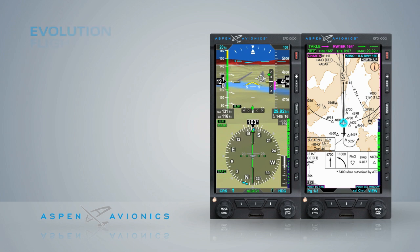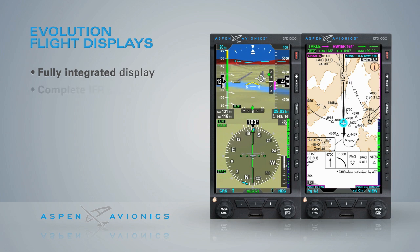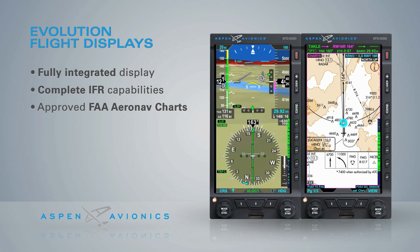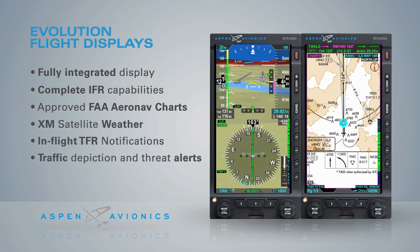In addition to Evolution Synthetic Vision, the Aspen Evolution flight displays also feature a fully integrated display, complete IFR capabilities, FAA-approved AeroNav charts for a paperless cockpit, XM satellite weather, in-flight TFR notification, traffic depiction and threat alerts, and it's approved for helicopters.